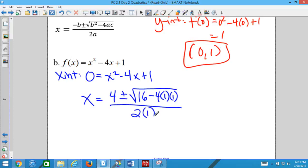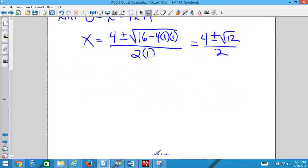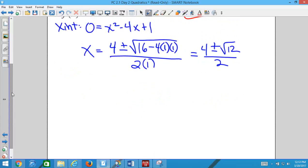Simplify. 4 plus or minus square root of 12 over 2. Does square root of 12 work? No, that's why it didn't factor. Because square root of 12 isn't going to come out to be a nice, easy answer. But we can simplify it. What's square root of 12? 2 radical 3. And then, at this point, can I factor out any numbers and cancel them?